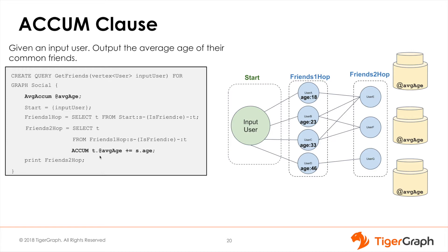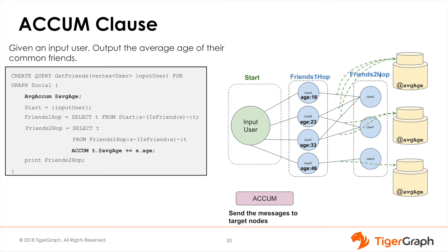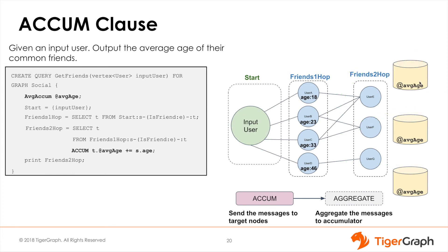In this accumulator clause we are updating the target vertex's average age accumulator value with the source vertex age attribute. In the accumulator clause a message is sent from all the edges to the target nodes, and the data is collected in each target node's bucket. The final value of the accumulator cannot be seen until the ACCUM phase is complete. The data is then aggregated and the value is stored in the local accumulator of each node and can finally be accessed.